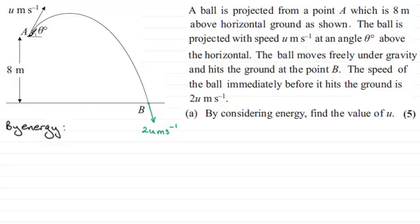then at A the ball has got kinetic energy and it's also got gravitational potential energy because it is a height above the ground. But then it's going to give up that energy just to kinetic energy at B. It's lost its gravitational potential energy.